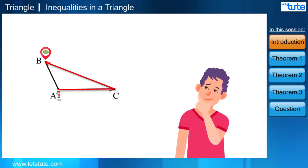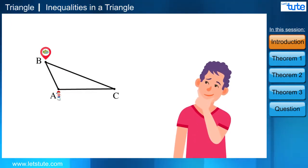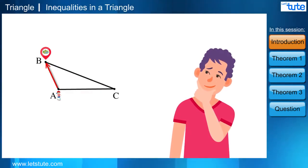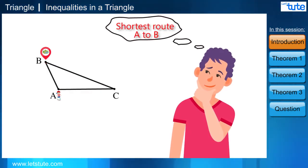Now which one you think would be more feasible for him or the shortest route for him? Yes, you got it right. It would be from point A to B, the shortest route.